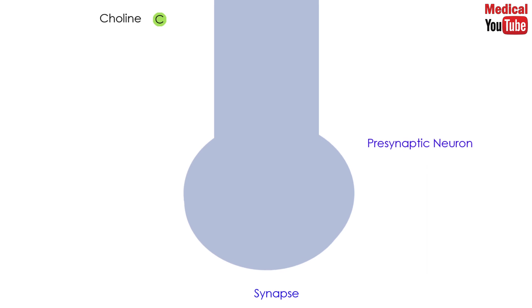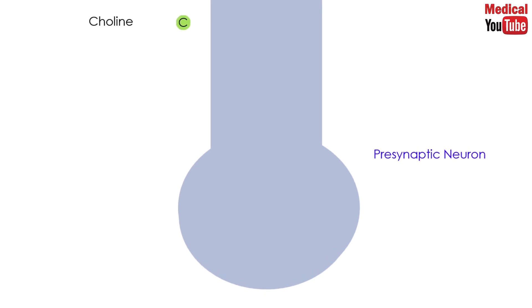Choline is a compound that carries a positive charge, so it cannot diffuse through the membrane of the neuron. It needs a transporter to deliver it to the cytoplasm of the cholinergic neuron, and that is done by an energy-dependent carrier system that co-transports sodium. The uptake of choline is the rate-limiting step in acetylcholine synthesis. Then, choline acetyltransferase catalyzes the reaction of choline with acetyl-coenzyme A to form acetylcholine.